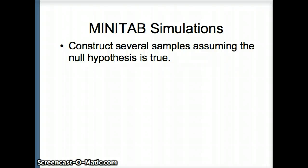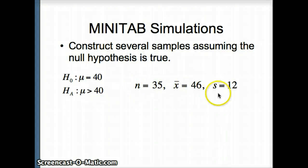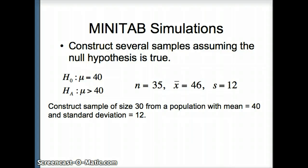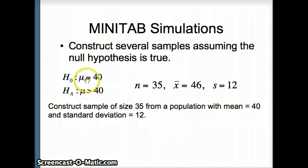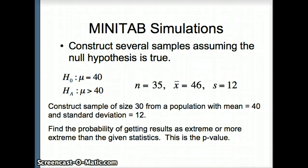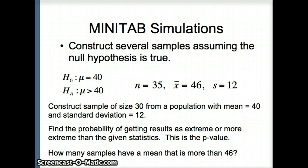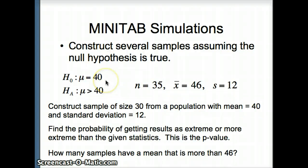Let's look at some Minitab simulations. We'll construct several samples assuming H0 is true, so mu equals 40. We construct samples of size 35 from a population with mean 40 and standard deviation 12, letting s stand in for sigma. We put 10,000 values in C1 through C35, compute row means into C37, then sort C37 into C38. We look for how many samples have a mean greater than 46. If that's very unlikely, then H0 is likely false. If fairly likely, we cannot reject H0.